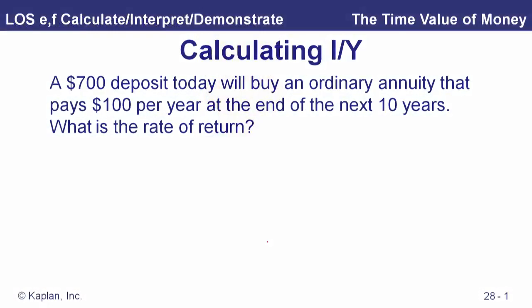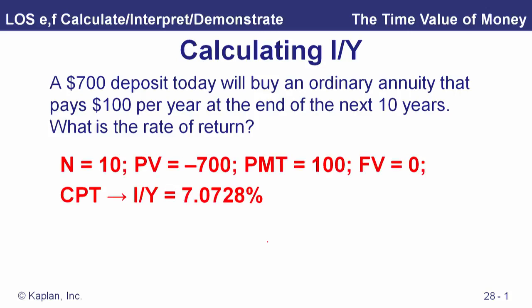One more example: a $700 deposit today buys an ordinary annuity paying $100 per year at the end of the next 10 years. What is the rate of return? N is 10, we're in end mode, PV is -$700 (amount paid out today), payments are +$100, and FV is 0. We compute the implicit interest rate and find it's 7.0728%.